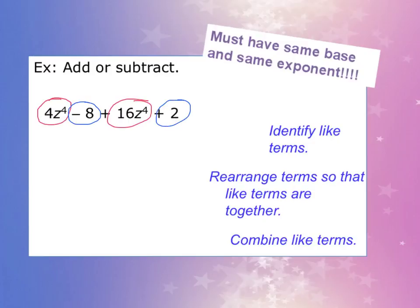Combining the z^4 terms, I get 20z^4, right? Think of them as apples or Oreos. You have 4, you add 16, you have 20. For the blue terms, we take -8 and add 2, and we get -6. Here is our answer: 20z^4 - 6. Notice there are no other terms to combine.